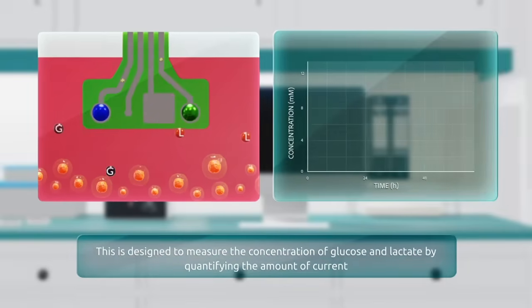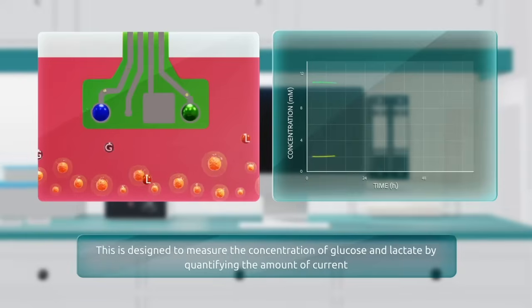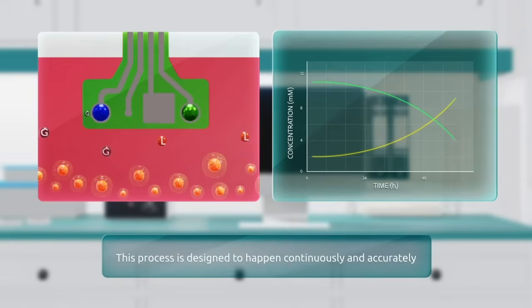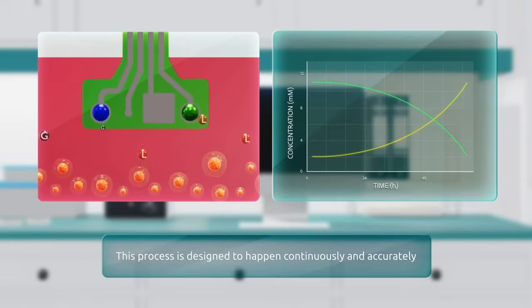Conventional periodic sampling methods can impact cell growth negatively and may risk contaminating samples, but continuous inline monitoring offers a solution to the challenges of conventional periodic sampling.